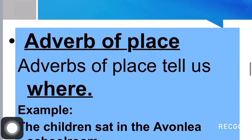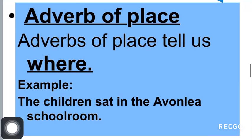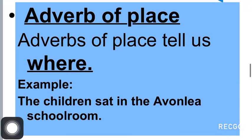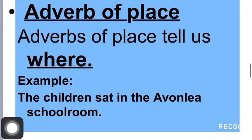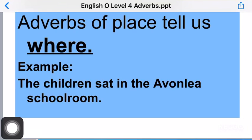The first type of adverb we have to discuss is called adverb of place. A word which gives us more information about the place — adverbs of place tell us where. 'Where' means a place; it tells us about the place. Example: 'The children sat in the Amalia School room.' Here the word 'sat' is the verb, and 'in the Amalia School room' is the adverb of place.